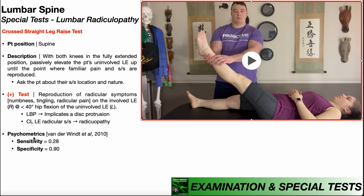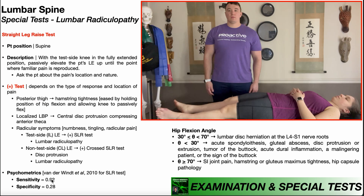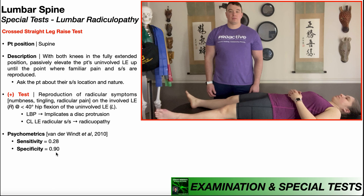The psychometrics of this test were evaluated by van der Wint et al. in 2010, and the psychometrics are essentially the opposite of those of the straight leg raise. The straight leg raise had very good sensitivity and very poor specificity. But the specificity of the crossed straight leg raise is all the way up at 90%, meaning this test is much better at ruling in a lumbar radiculopathy. So if somebody has a positive crossed straight leg raise test, there's a 90% chance that they have a lumbar radiculopathy.